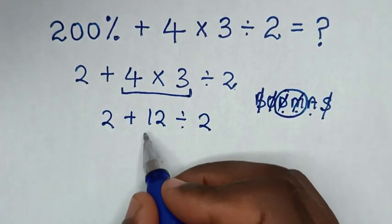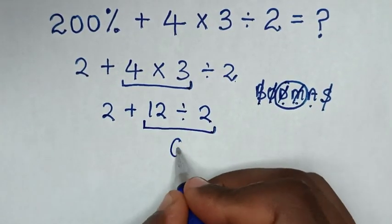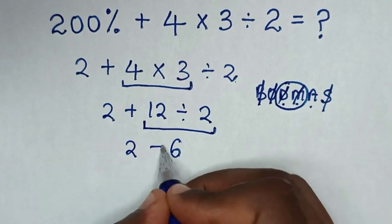12 divided by 2, which is 6. So it will be 2 plus 6.